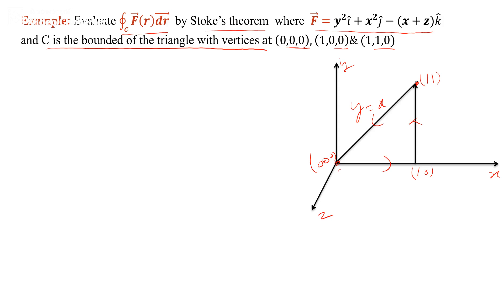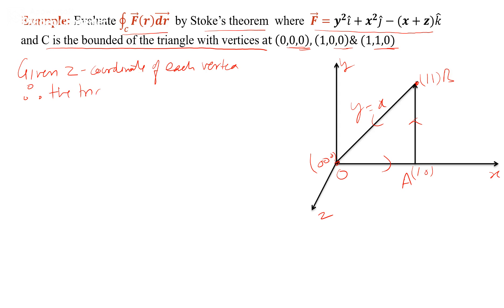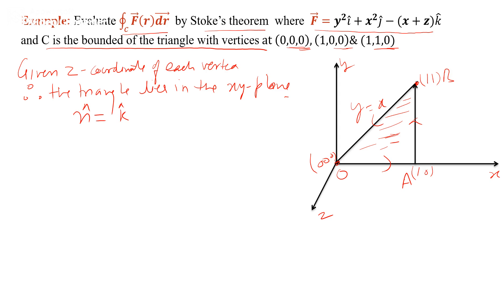The region is bounded by the lines through origin O, point A, and point B. Since the z-coordinate of each vertex is zero, the triangle lies in the xy-plane. Because the triangle lies on the xy-plane, the unit normal vector n-cap is equal to the unit vector k. Now we evaluate the curl of F.